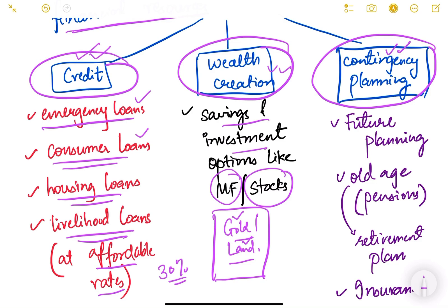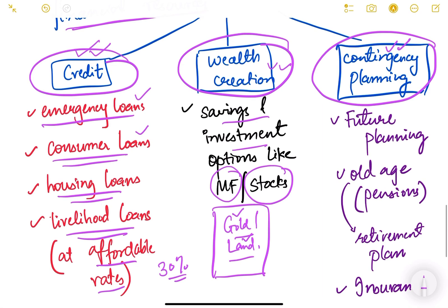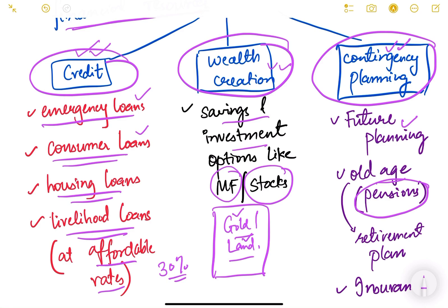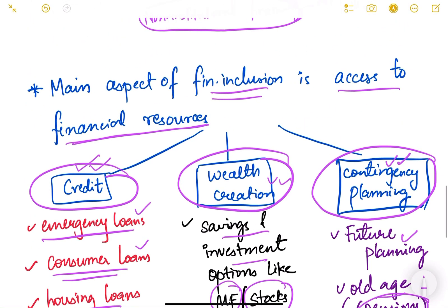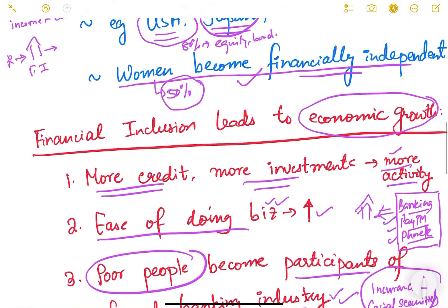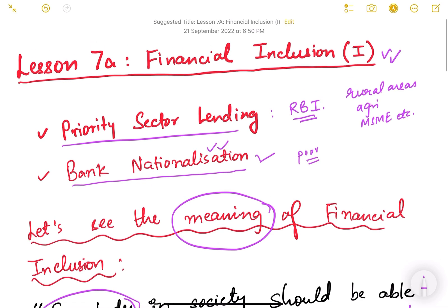Finally, there is contingency planning — planning for the future. For old age, for example, pension — you should be able to have some fixed income after you retire. In the formal system you will get some kind of pension or access to your savings, but for informal sectors there are no pension plans. There should also be insurance — if you accidentally die or become physically disabled, you should have insurance to cover that. These are basically the main aspects of financial inclusion. From the next video we'll talk about financial inclusion in India — how it is happening and what steps the government is taking.